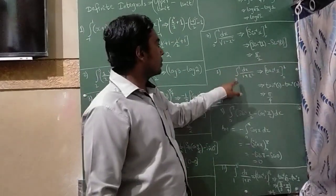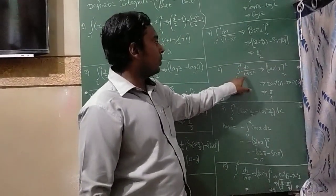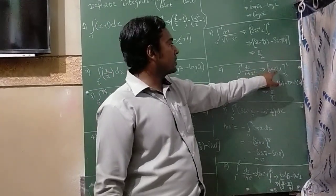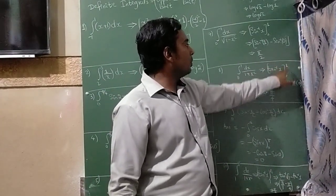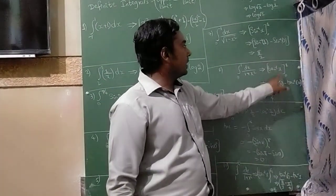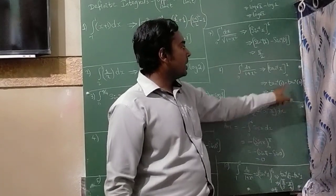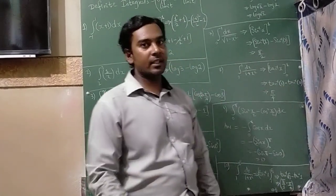The next question is integration of 0 to 1 of dx/(1 + x²), which equals tan⁻¹(x) evaluated from 0 to 1. Tan⁻¹(1) = π/4 and tan⁻¹(0) = 0, so the answer is π/4.